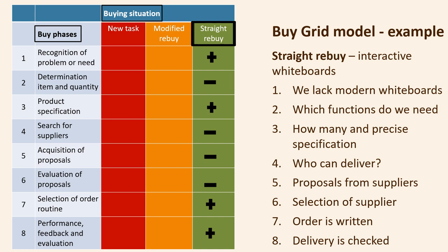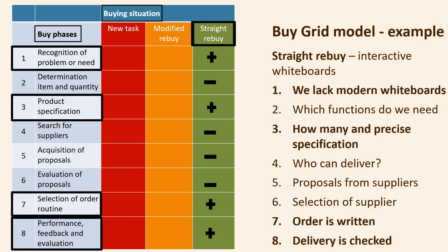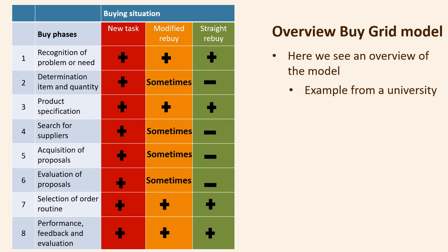If we assume that the university buys the same boards because they are delighted with them, then we have a straight rebuy situation. Here we have problem recognition — we need more boards — but there must be a product specification that the supplier can hold up to, and an order specification and control. We only need to handle phases one, three, seven, and eight. We have now provided an overview of the BuyGrid model and listed an example from a university of the use of the model.